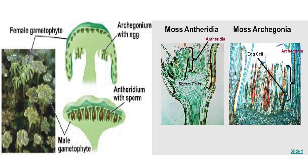An archegonium is a multicellular structure or organ of the gametophyte phase of certain plants, producing and containing the ovum or female gamete. The archegonium has a long neck canal or venter and a swollen base. Archegonia are typically located on the surface of the plant thallus, although in hornworts they are embedded.